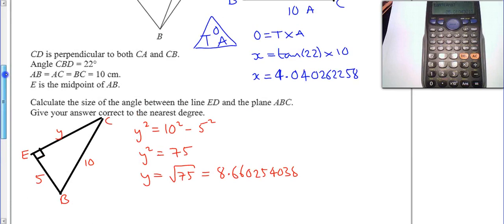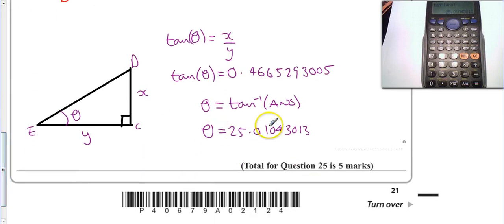It says to the nearest degree, so to the nearest degree this is closest to 25 degrees. That took me seven minutes to have a go at that, so that's a five mark question - that's the kind of speed you should be able to do it yourself.